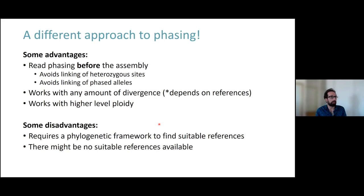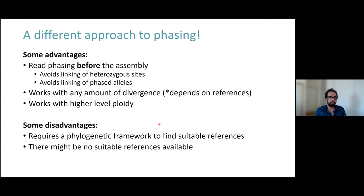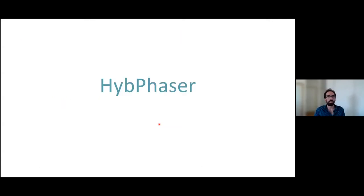This approach has several advantages: it does the phasing before assembly, avoiding the linking of heterozygous sites and phased alleles, it should work with any amount of divergence, and it should also work with high ploidy levels where reads can map to three, four, or five clades. The main disadvantages are that it requires a phylogenetic framework to find suitable references, and we might not find any suitable reference if the parental lineages are extinct or not sampled. This led me to develop the workflow now called HyPhaser.